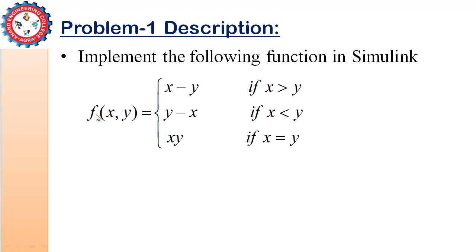We have a function with two variables x and y — these are the two input variables. If x is greater than y, the value of the function is x minus y. If x is less than y, the value is y minus x, and if x is equal to y, the function value is x into y. We have to implement this concept in Simulink.